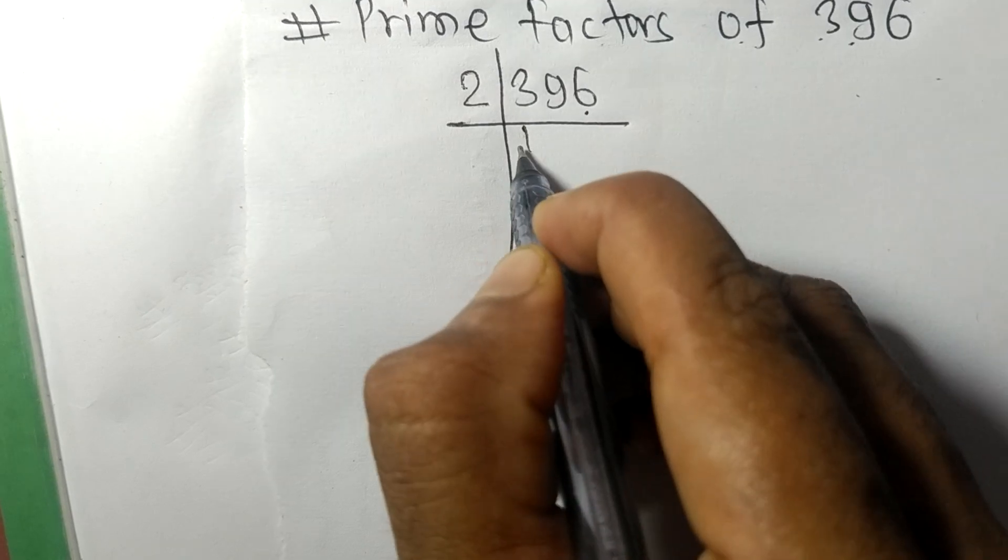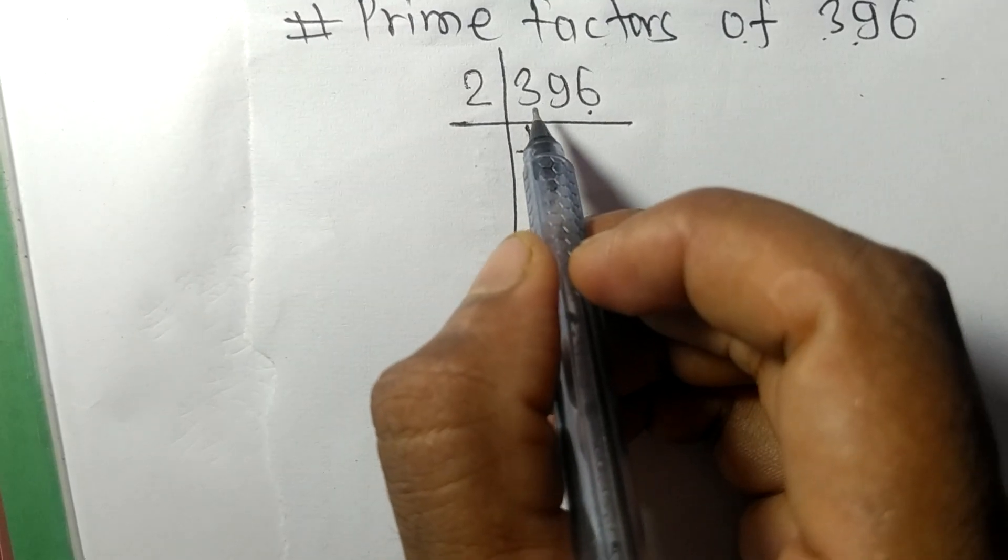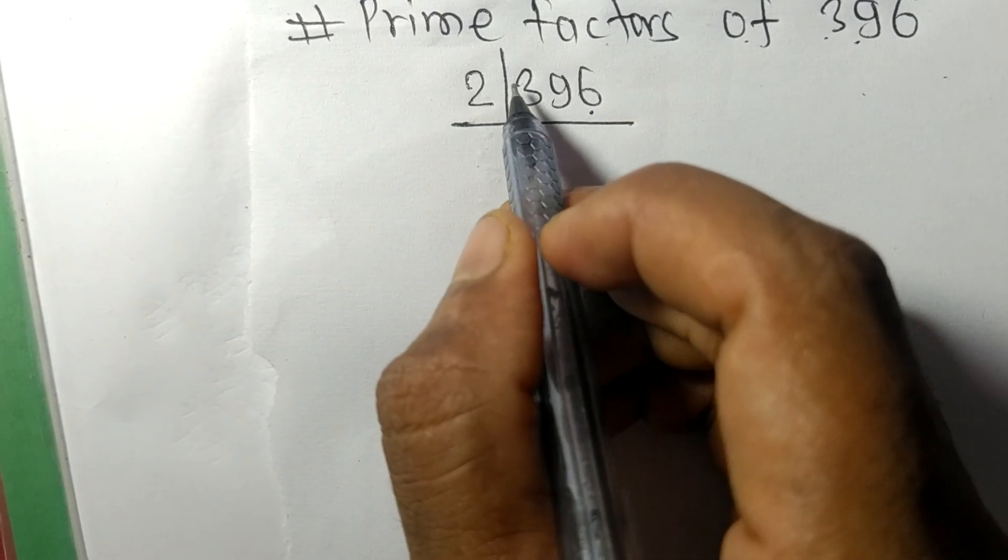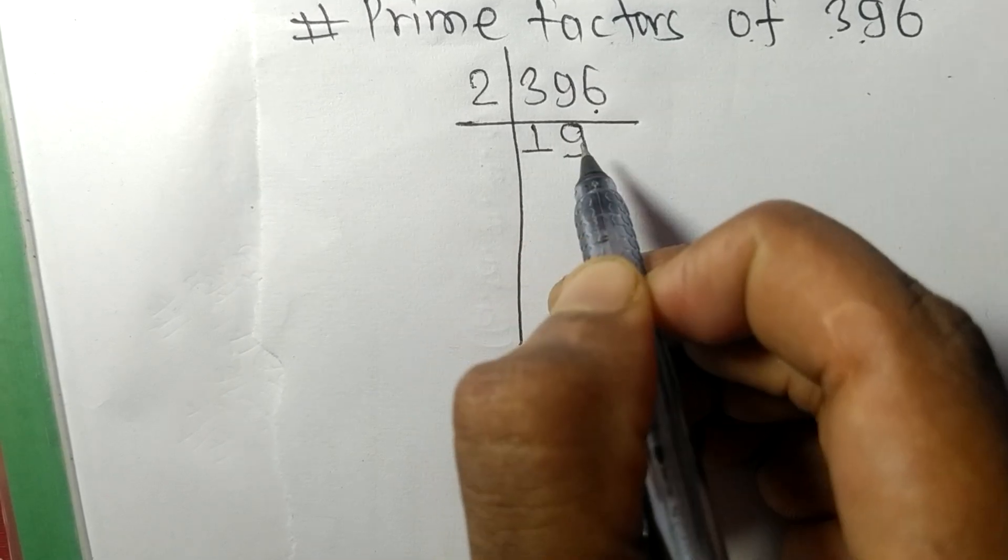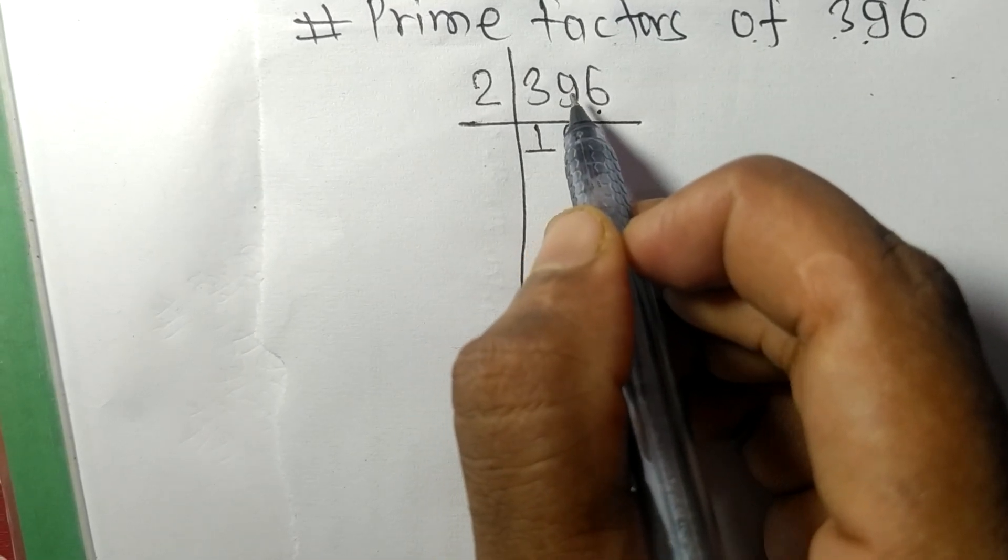So 2 times 1 equals 2, remainder 1. So 1, 9, 19. 2 times 9 equals 18, remainder 1.